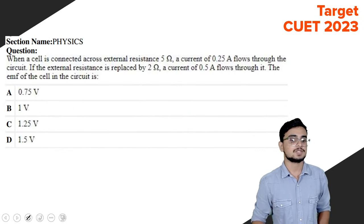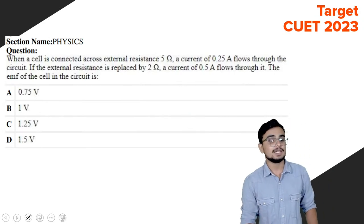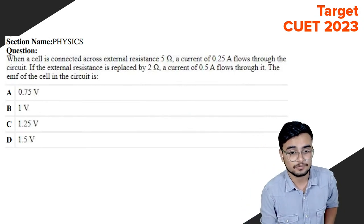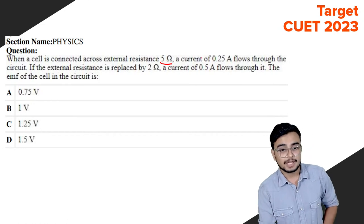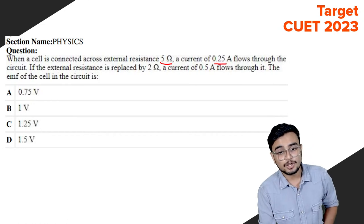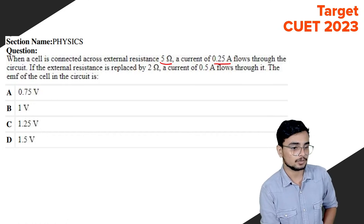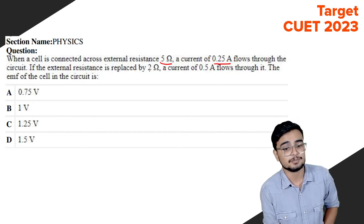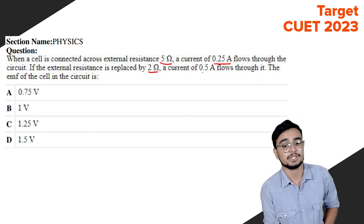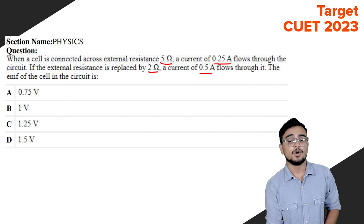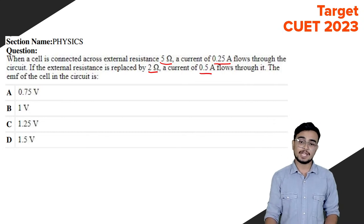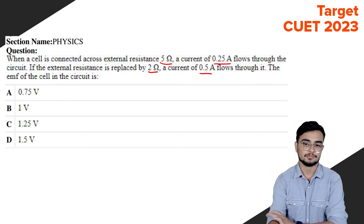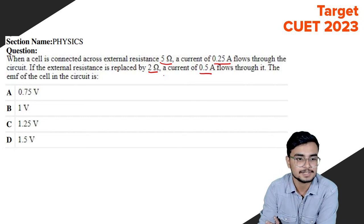When a cell is connected across an external resistance of 5 ohms, a current of 2.5 amperes flows through the circuit. If the external resistance is replaced by 2 ohms, the current is 0.5 amperes. We need to find the EMF. We have two cases to work with.